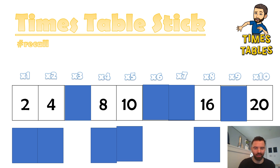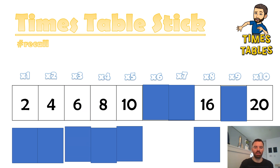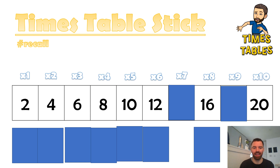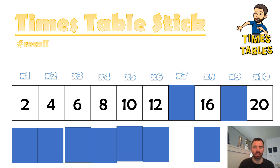Triple two — that means two add two add two. Triple two is six. Can you double six? Double six — six add six — double six is twelve. And you can see that times three is six, and double three gives you six as well.